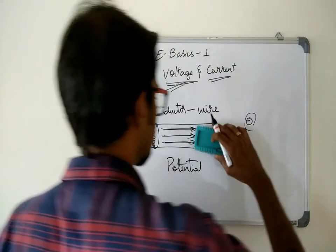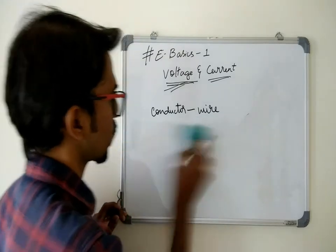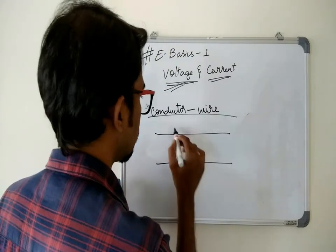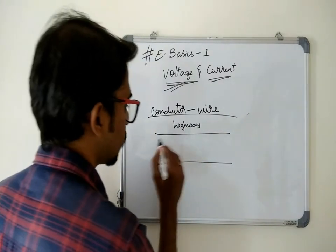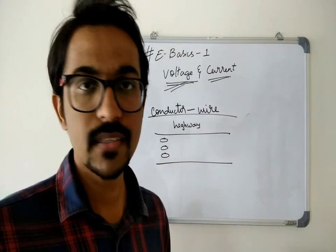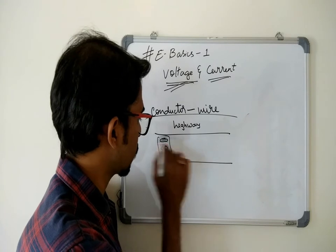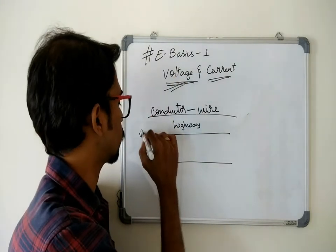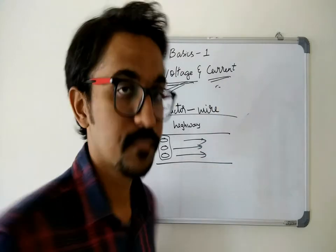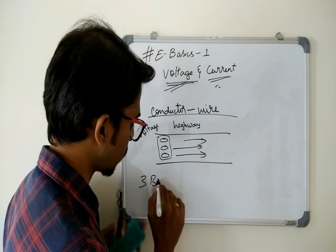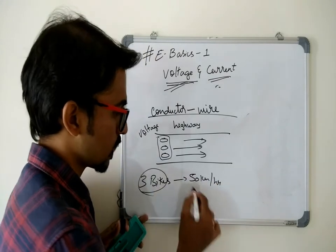Let me put it in a simpler way instead of electronics. Let me take a road, a highway. Consider this is a highway and there are three vehicles traveling in this. Three bikes traveling along the road. So the number of vehicles traveling through the road can be told as voltage and the speed at which these vehicles are traveling on the road is current. Say for example three bikes are traveling at a rate of 50 kilometers per hour.